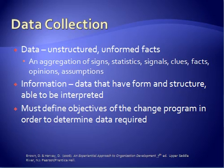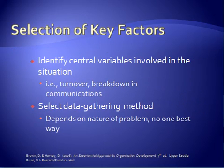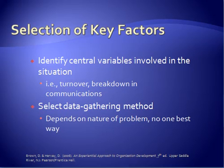The first step is to define your objectives for the change program. Defining those objectives will then determine what data will be required in order to come up with an accurate diagnosis. The next thing is to identify what the central variables are for this particular situation — some examples might be the variable of turnover or variables in terms of breakdown in communication. Once you've got your variables, then you select your data gathering method. Remember, there is no one best way for gathering data — it always depends on the nature of the problem you're investigating.